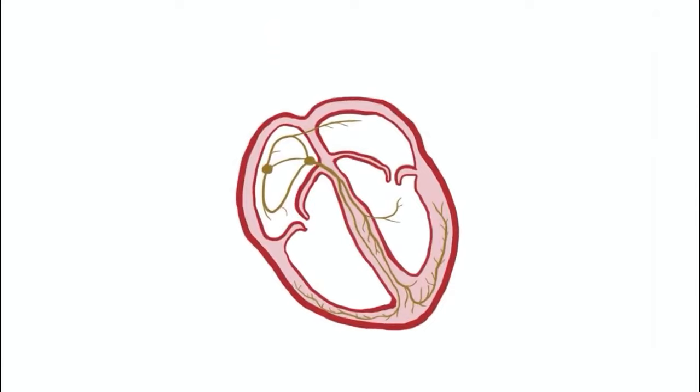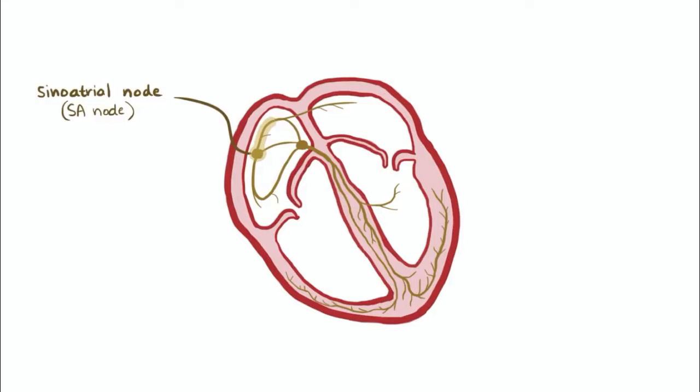Each heartbeat starts with the heart's pacemaker cells in the sinoatrial node, or SA node, in the right atrium. The SA node sends out an electrical signal that propagates out and contracts both upper chambers.